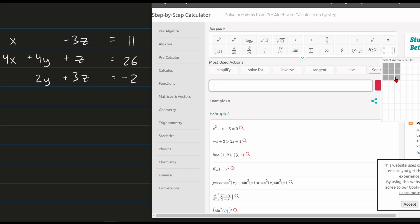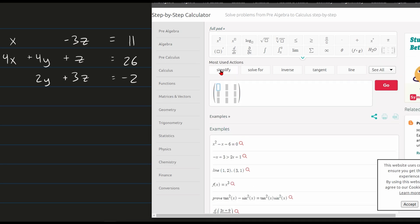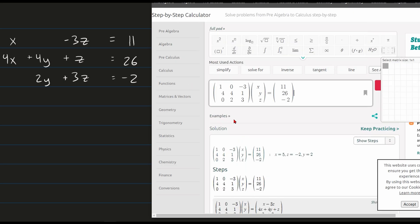For the left-hand side, we can see it's 3 by 3. So we would click 3 by 3 and this would come up. We would then fill it in with 1, 0, negative 3, then 4, 4, 1, 0, 2, 3, regarding this matrix.